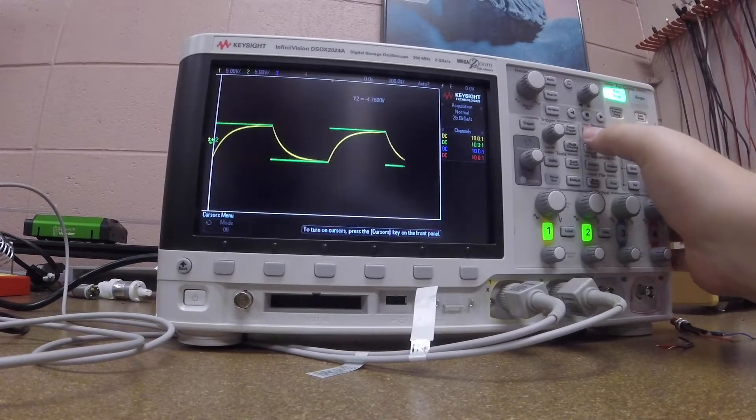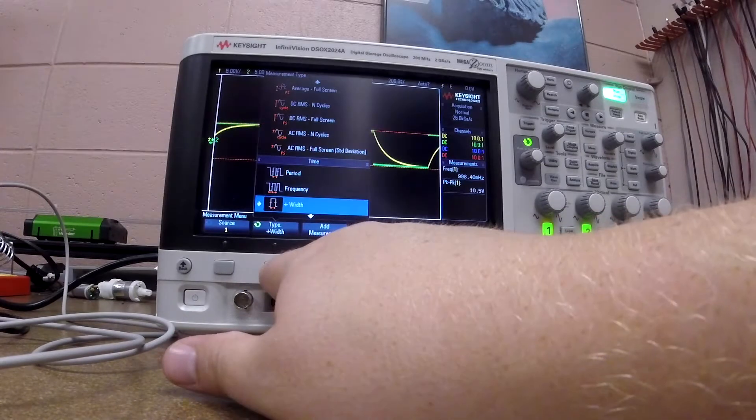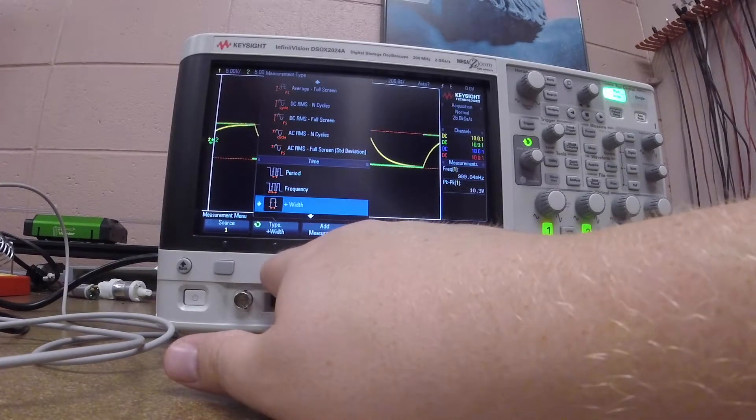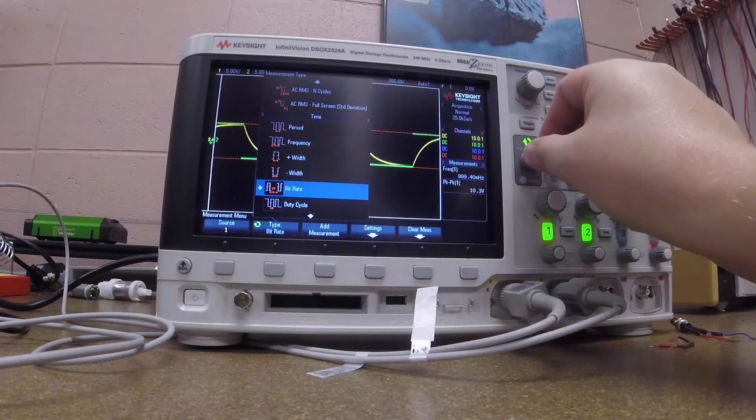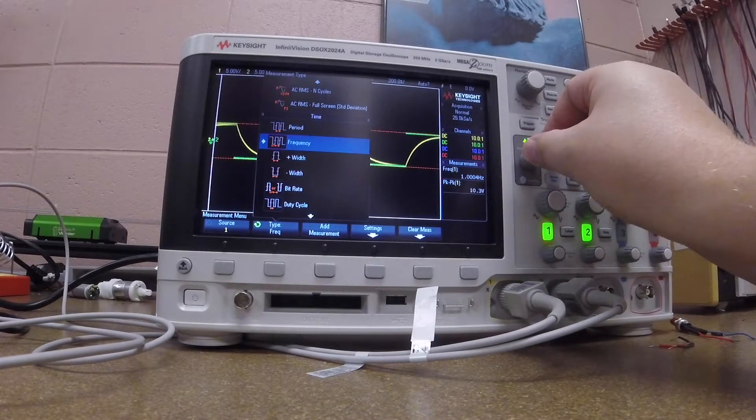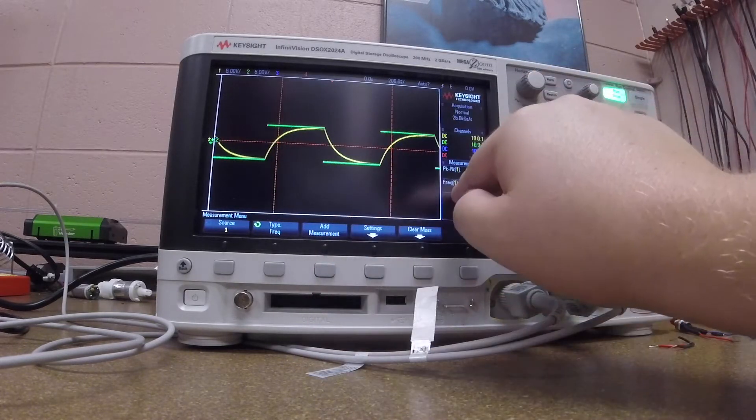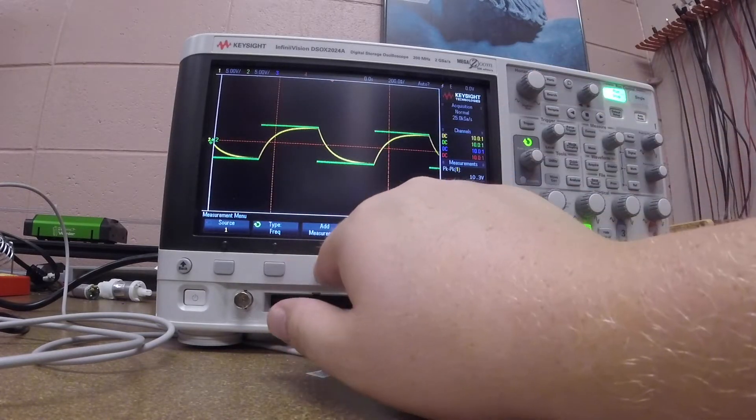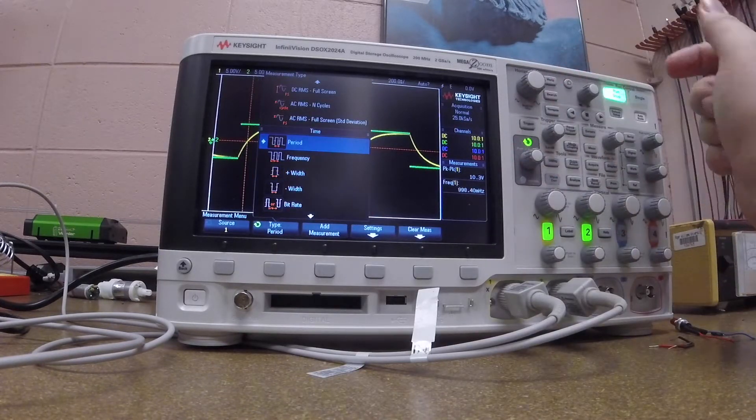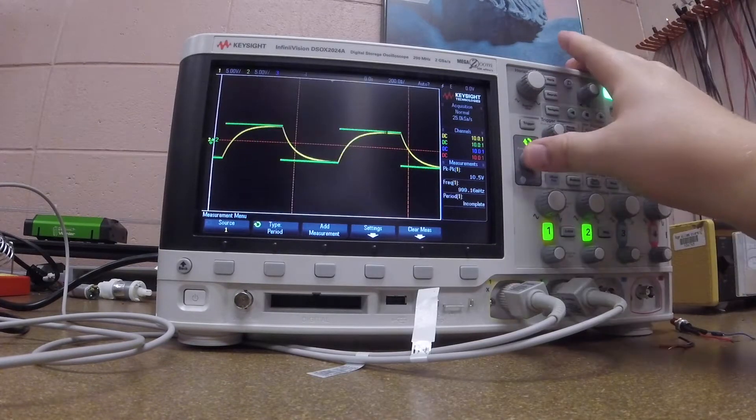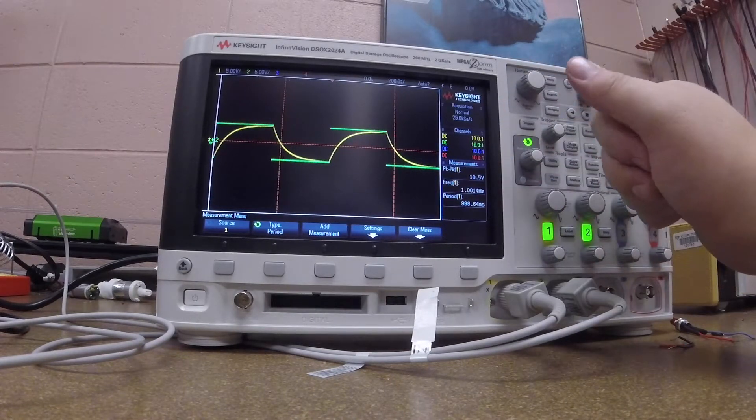If I want to measure particular things on my signal, let's say we run and turn our cursors off, I can press the measure key. I can choose a number of different types of measurements. I can go with period, frequency, width, etc. Let's look at, for example, frequency. I could add another measurement then, so that gives me about a hertz. Let's add a measurement, let's say the period, which is of course one over the frequency. Select that. Now I've got the period, which is about a second.